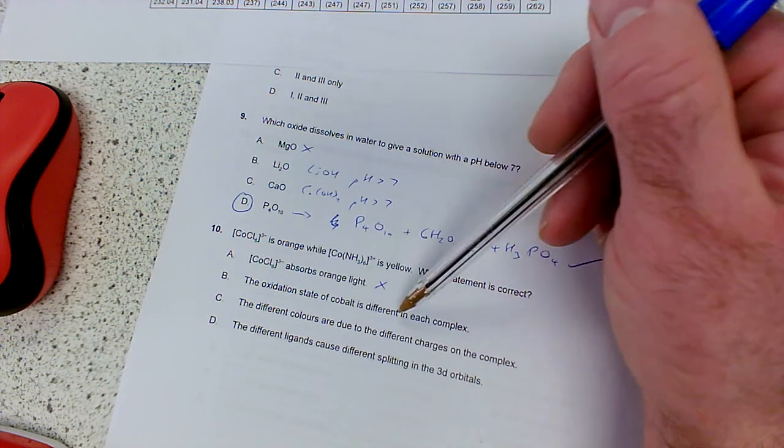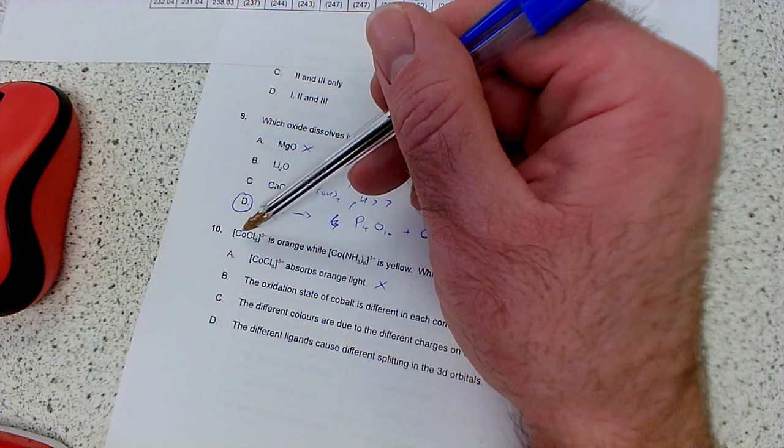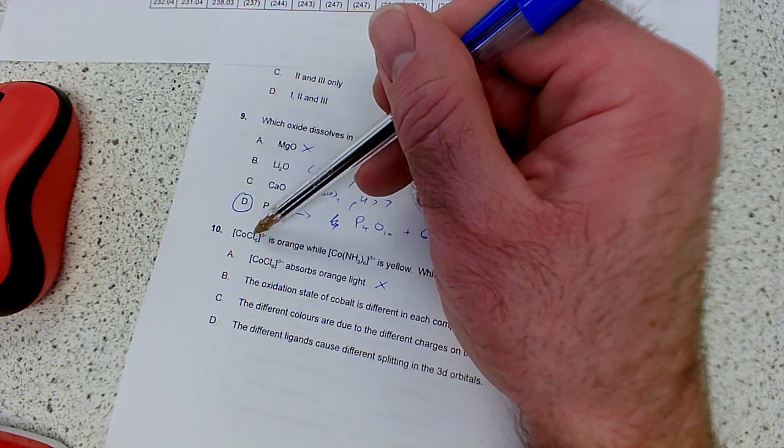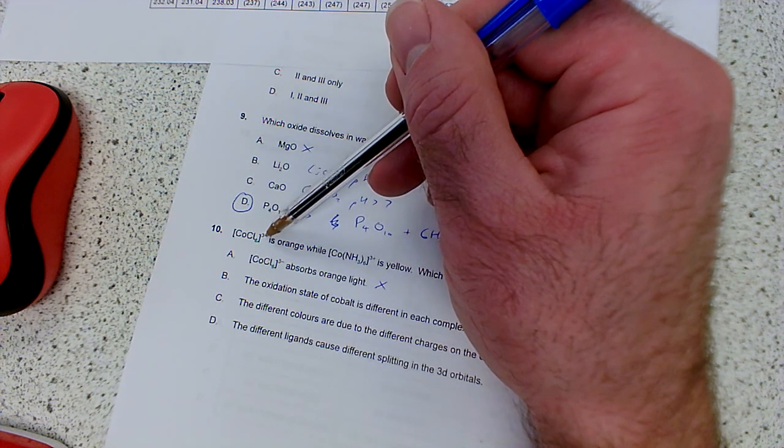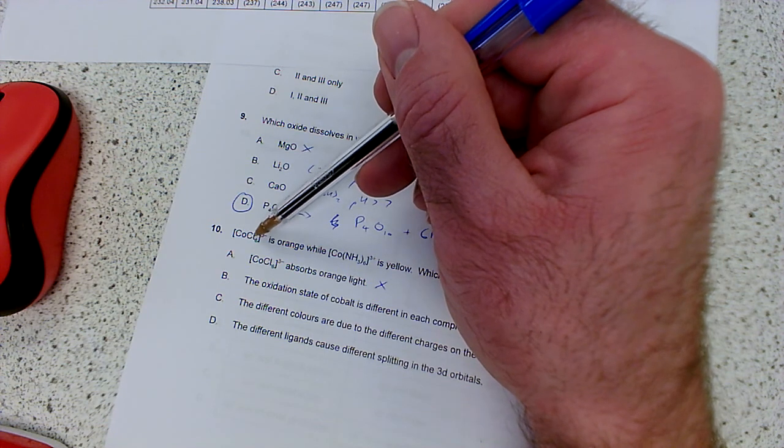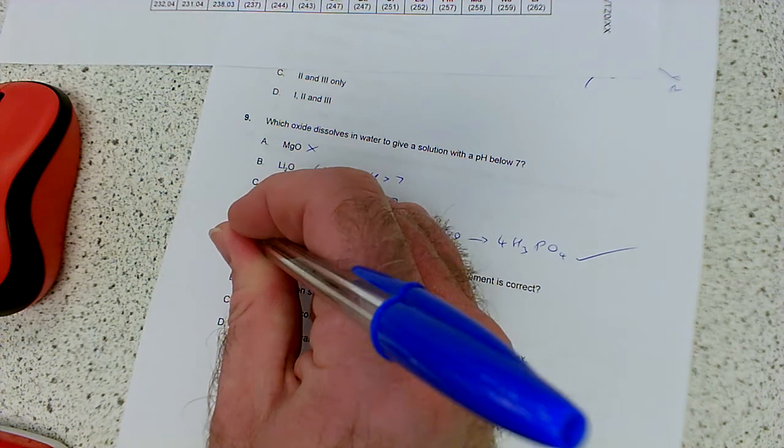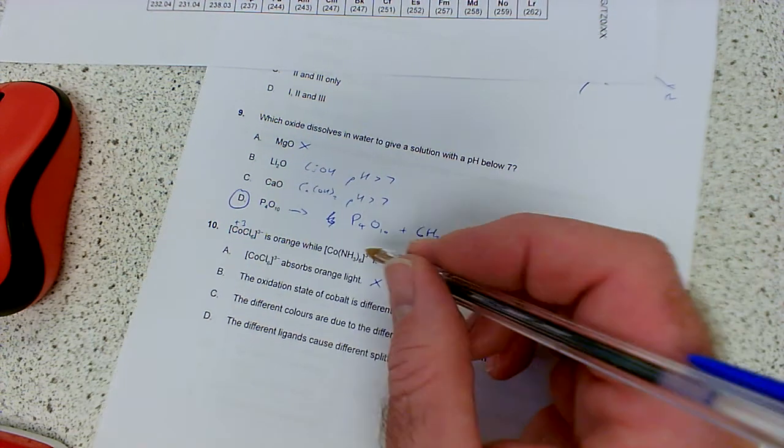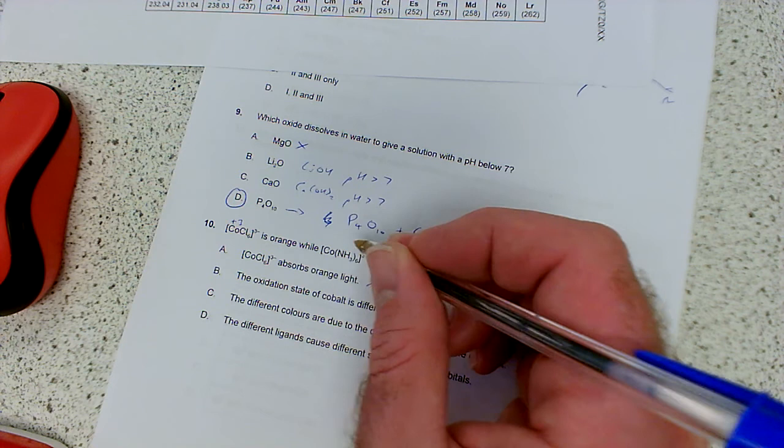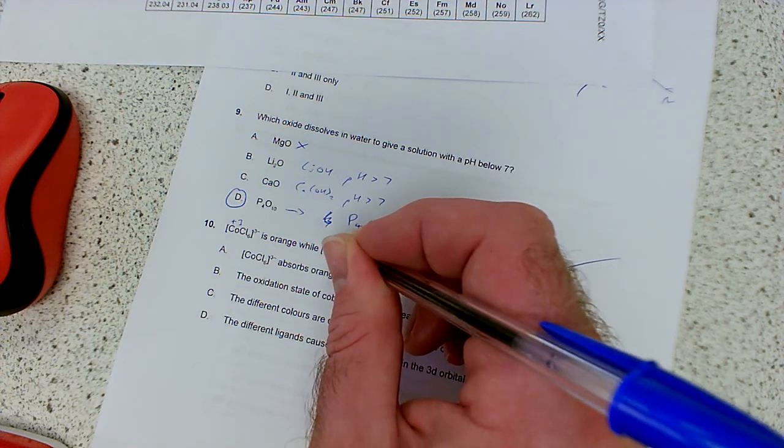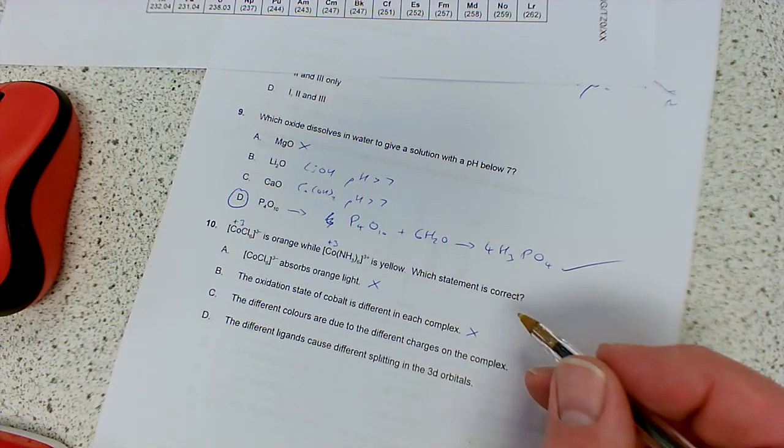The oxidation state of cobalt is different in each complex. Well, it's not, though, is it? Because it's plus 3 in this one, because the chlorides have a negative charge. So, if they're down at 3 minus the complex ion, they bring it down by 6 minus. So, the fact that it's only on 3 minus means the cobalt must be plus 3 as an oxidation state. And here, well, it's a neutral species, the amine, ammonia. So, if it's 3 plus overall, there's no charge, so it must be plus 3 as well there. So, there's no difference in the oxidation state.